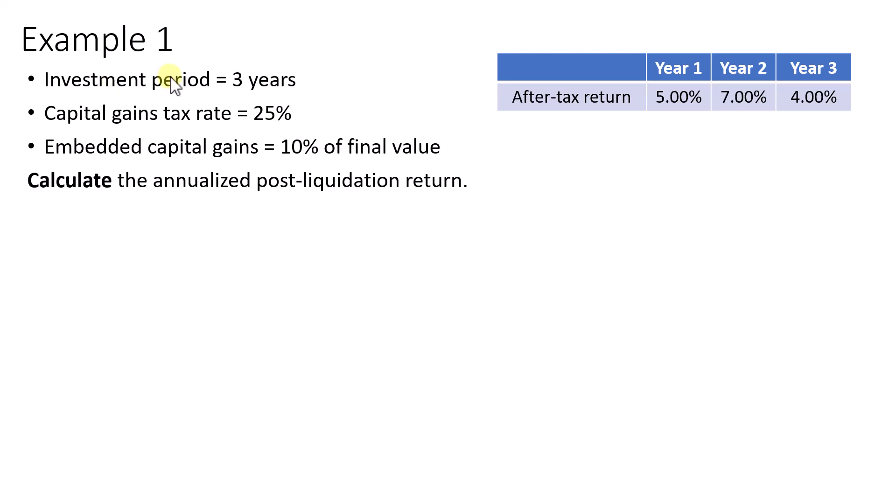Now let's look at an investment fund that is invested over a period of three years. We are given the after-tax returns for year one to year three, a capital gains tax rate of 25%, and the embedded capital gains would be 10% of the final value. We need to calculate the annualized post-liquidation return.